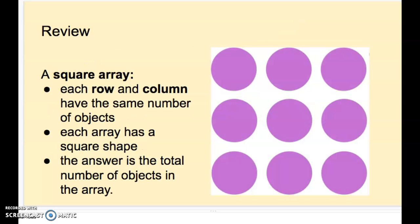We also learned about square arrays. Square arrays are different from rectangular arrays because they create a square shape. Each row and column have the same number of objects. I have three rows and I have three columns. This is a three by three array. And three by three gets us nine.